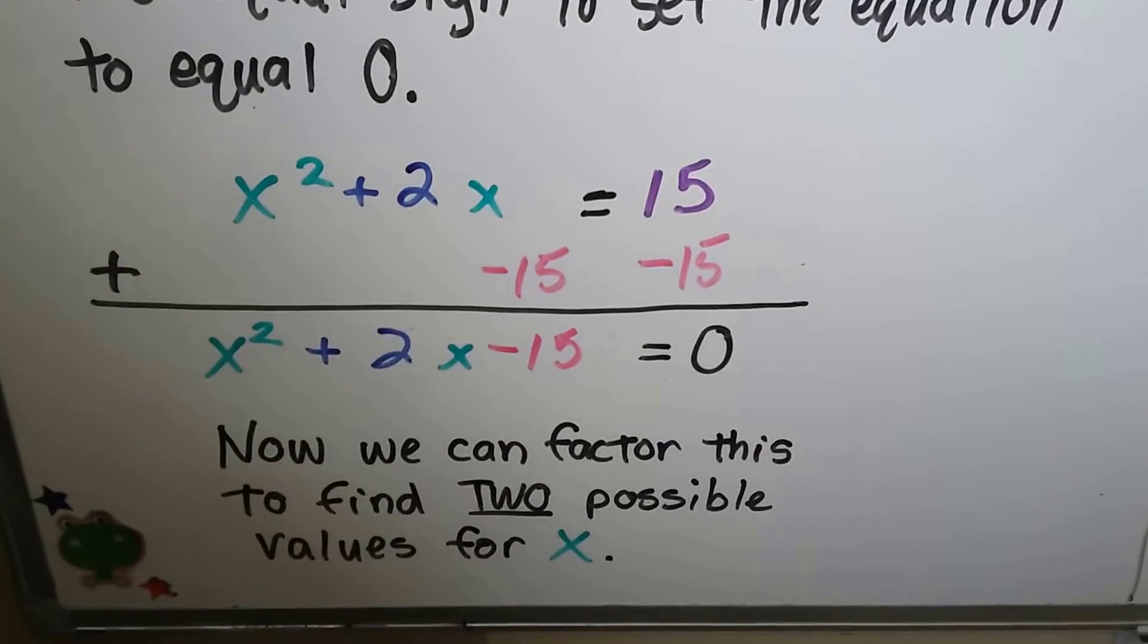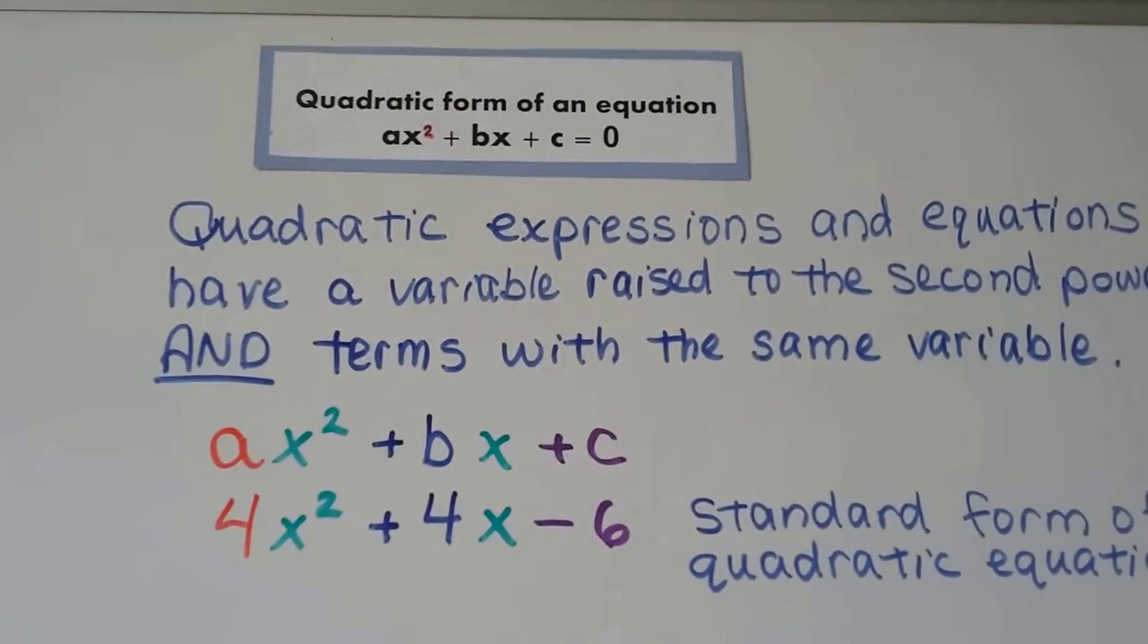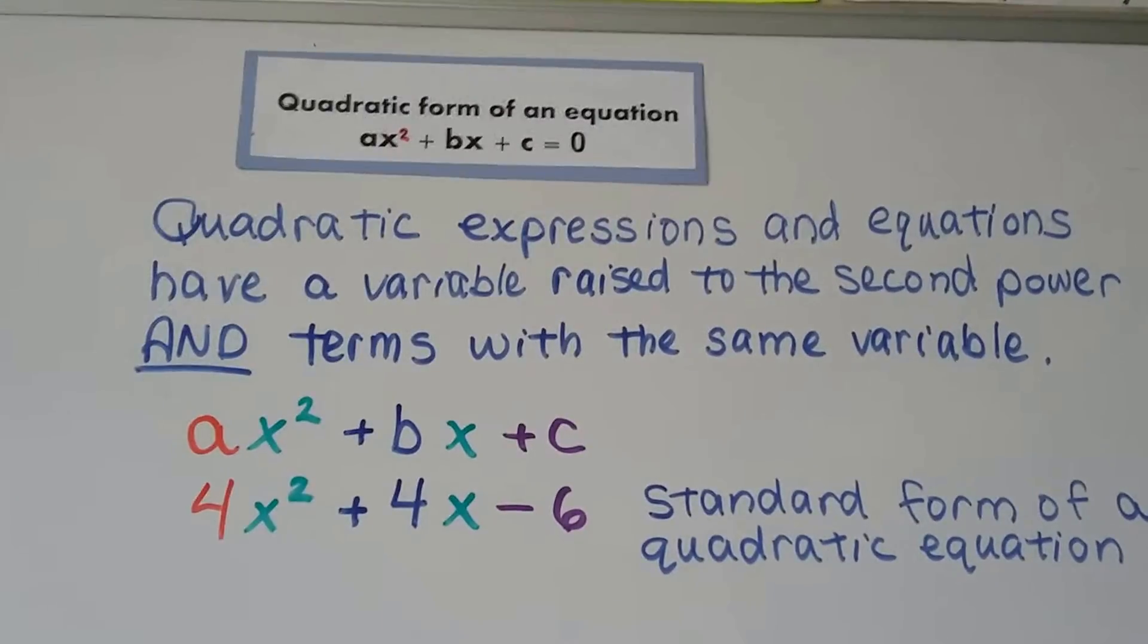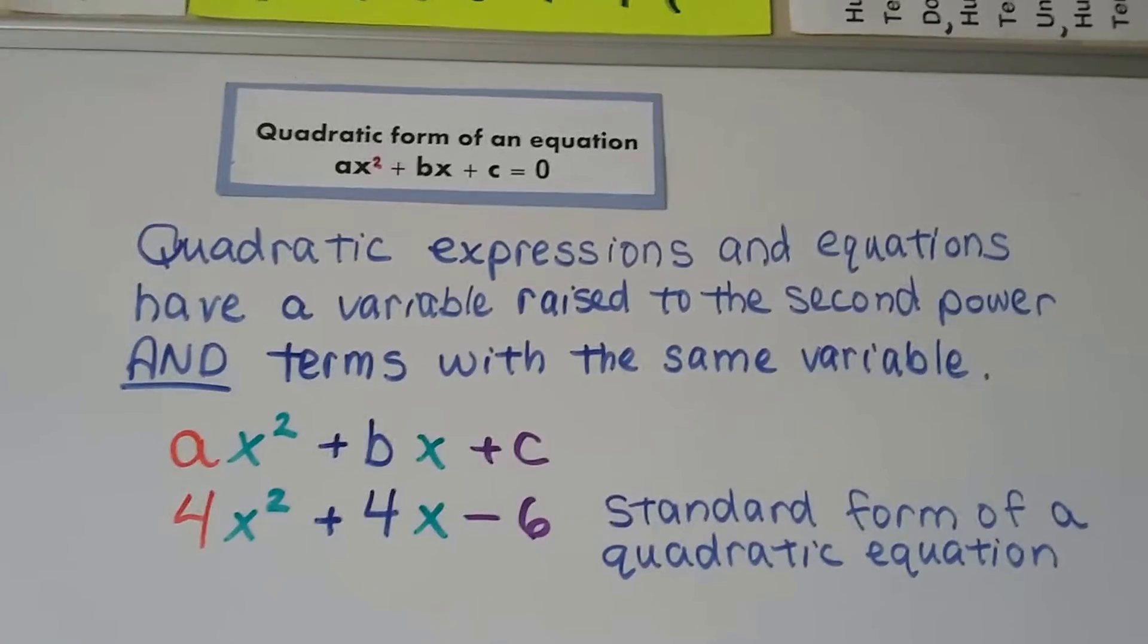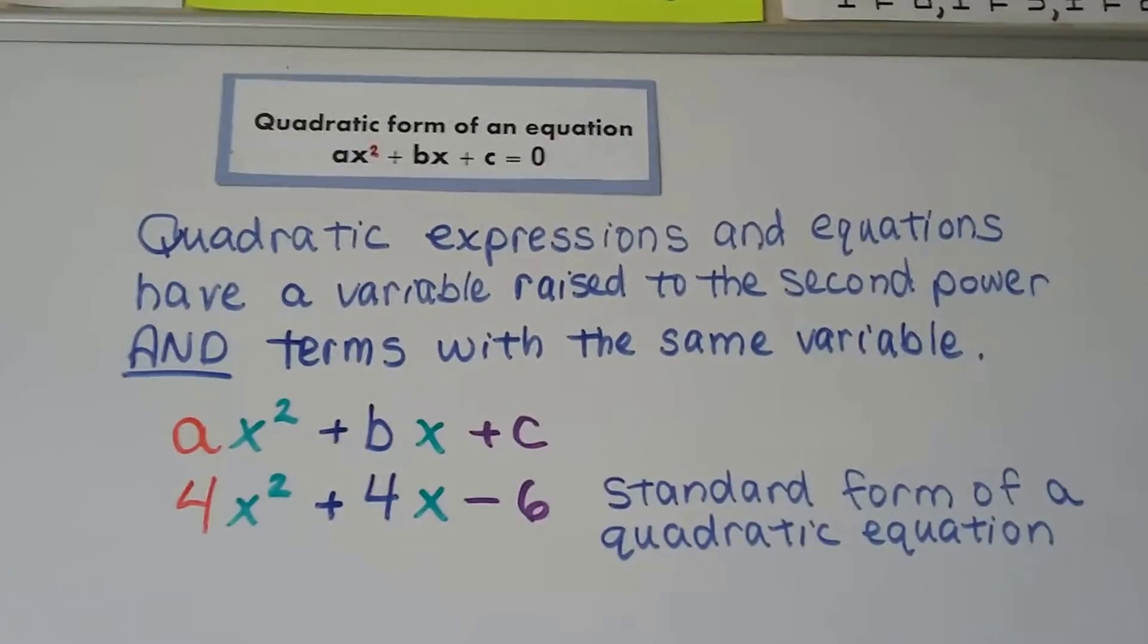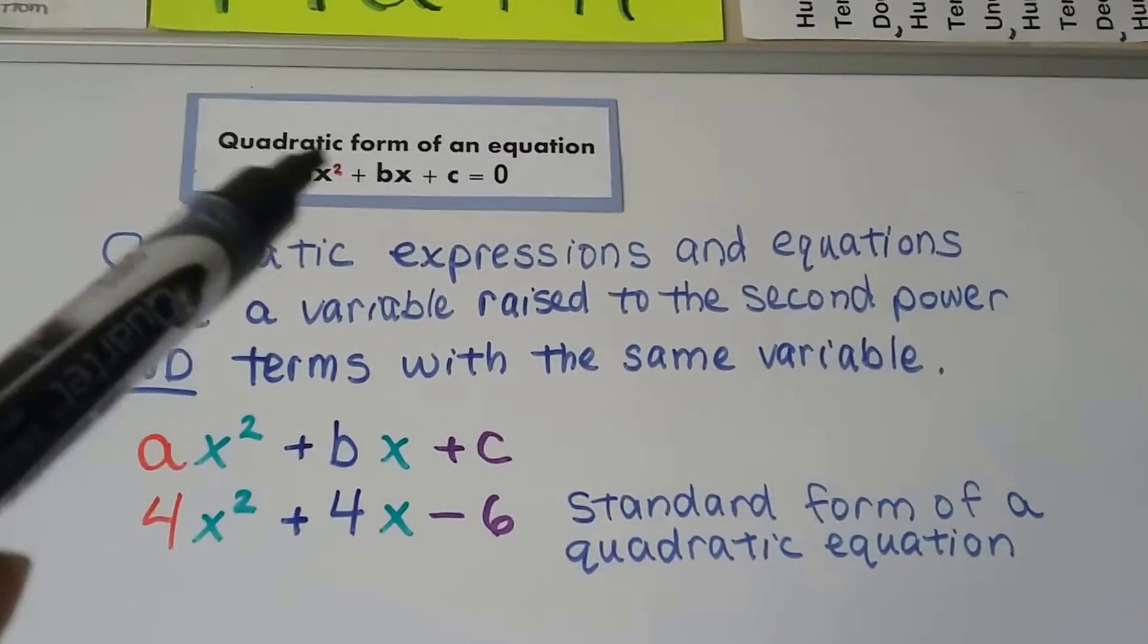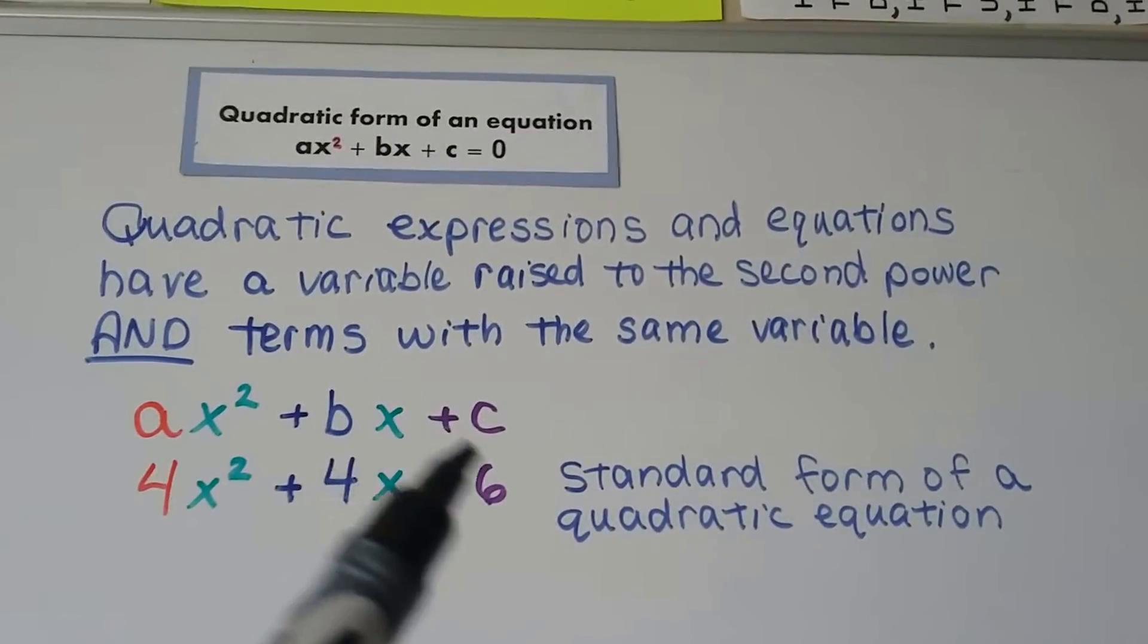Now we can factor this and find two possible values for x. So the quadratic form of an equation is ax squared plus bx plus c equals zero. That's the standard form. A quadratic expression, an equation, has a variable raised to the second power, and the terms have the same variable. They both have an x in them. One of them is an x squared.